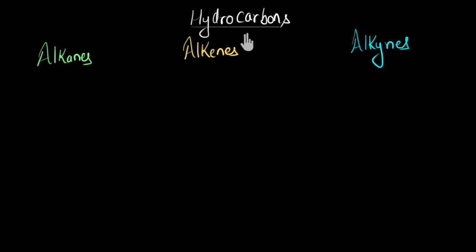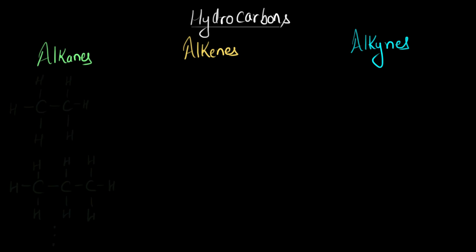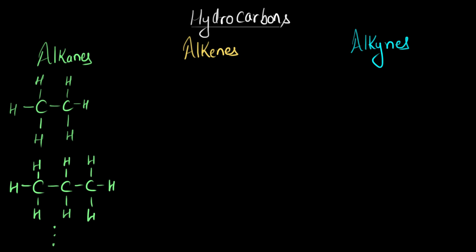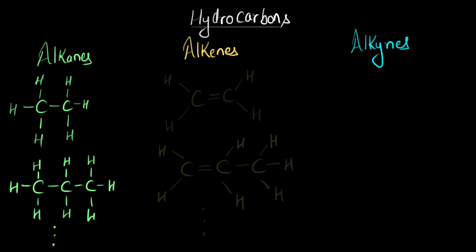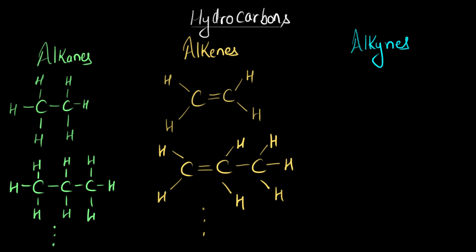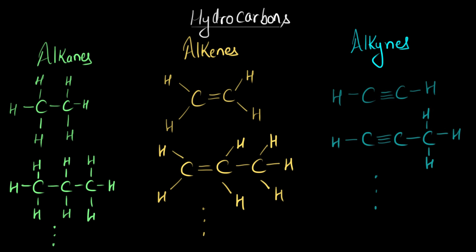Let's learn how to name hydrocarbons — basically those that belong to the family of alkanes, alkenes, and alkynes. Alkanes were hydrocarbons which only had single bonds between the carbon atoms. Alkenes were hydrocarbons which had at least one pair of carbon atoms with a double bond between them, and alkynes had at least one pair of carbon atoms with a triple bond between them.